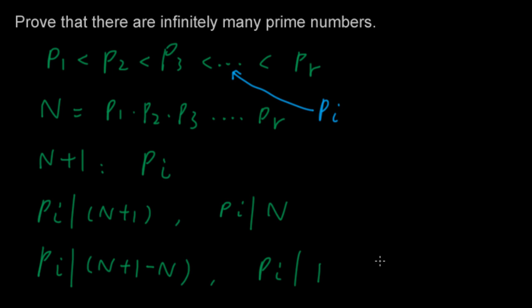But P I is greater than 1. It's a prime number. So it has to be greater than 1. It cannot be a factor of 1. So there's our contradiction. This cannot happen.